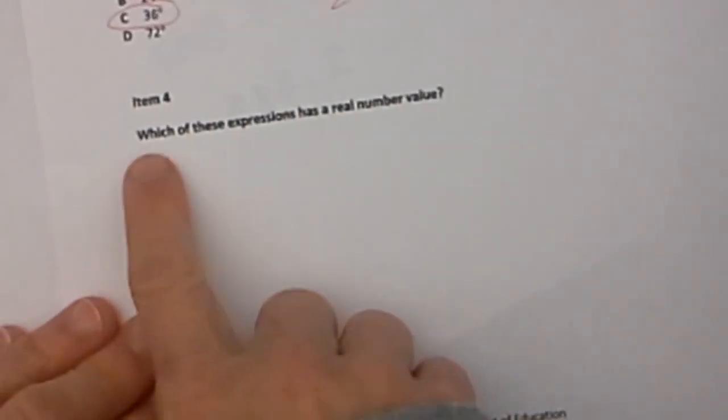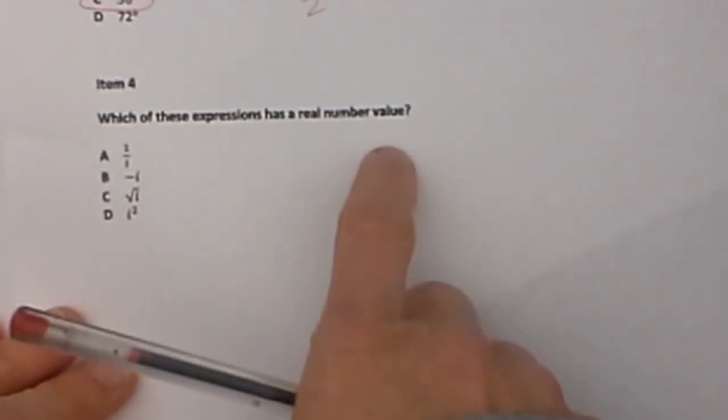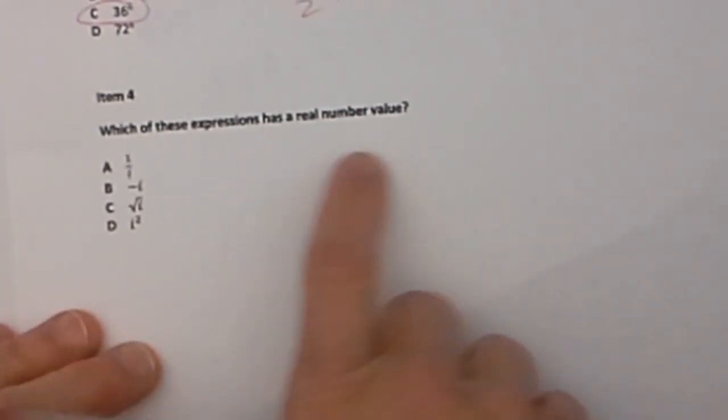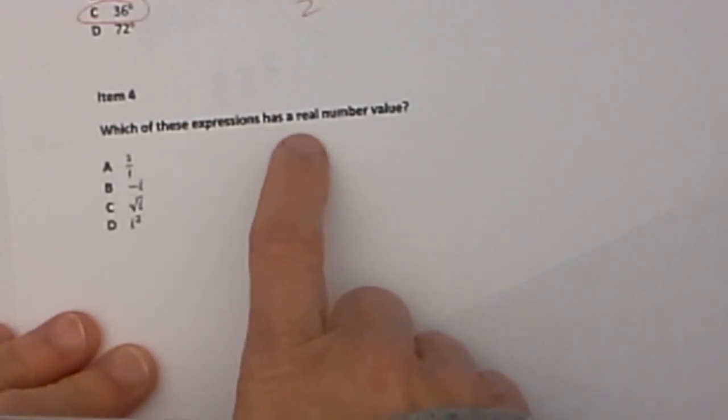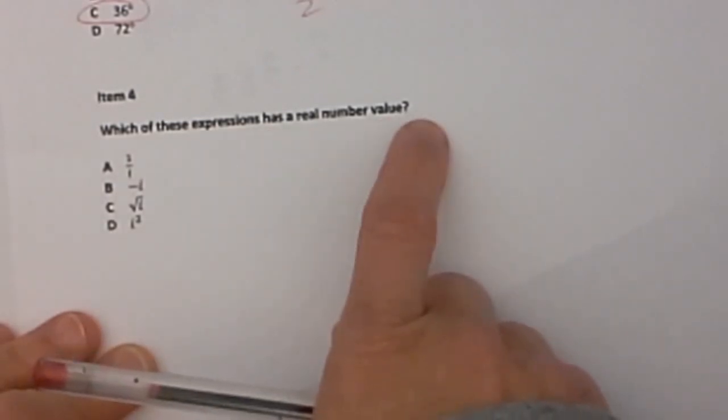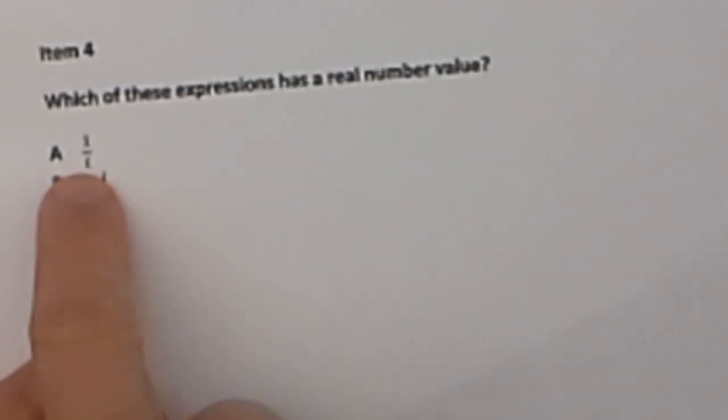Here is the fourth one. We are going to stop after this and I'll make a video of 5, 6, 7, and 8. Here is item 4. Which of these expressions has a real number value? A real number value means it can't be imaginary. So let's look at our choices.